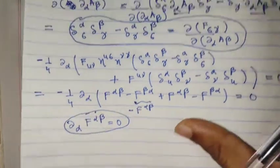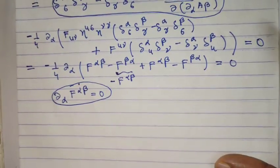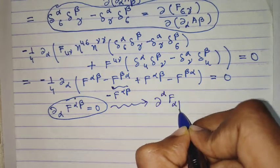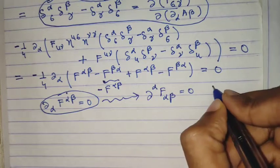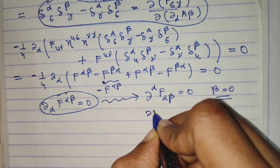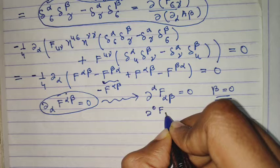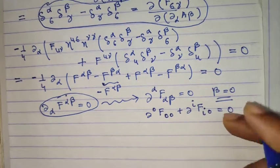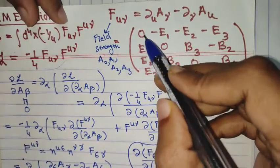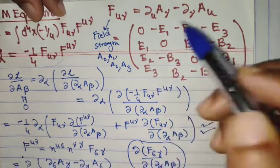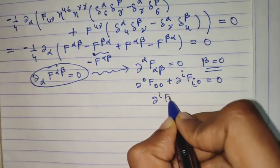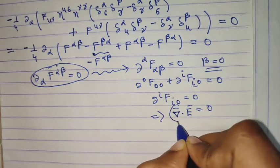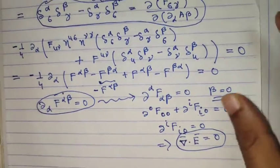This doesn't immediately look like a Maxwell equation, so we raise and lower indices to get the standard form ∂_α F^αβ = 0. Setting β = 0, we sum over the α index: ∂_0 F^00 + ∂_i F^i0 = 0. Reading F^i0 from the matrix, these are the electric field components, so ∂_i F^i0 = 0 means the divergence of E equals zero — the first Maxwell equation in vacuum, in the absence of any charge or source.